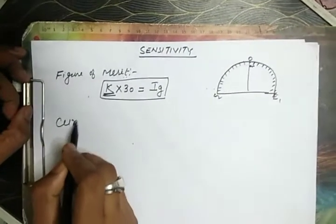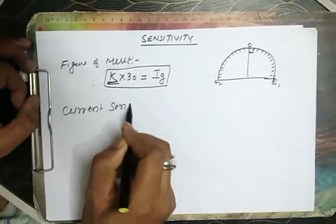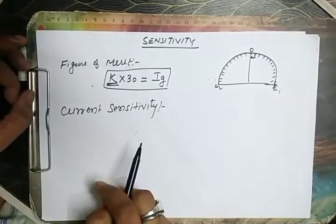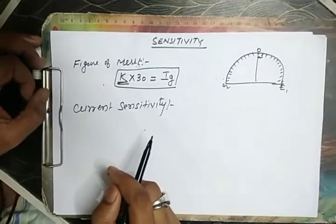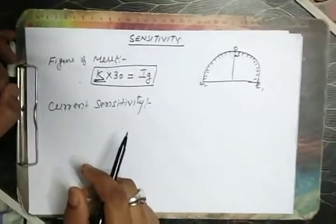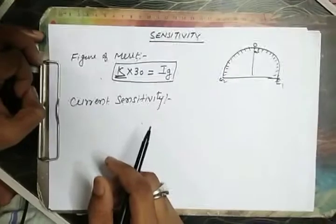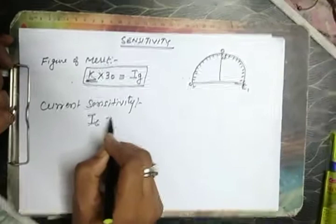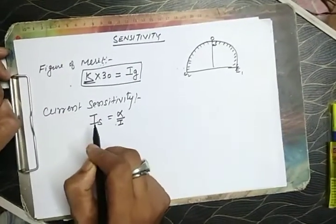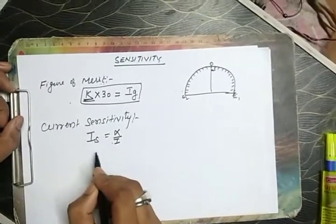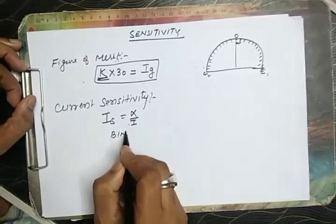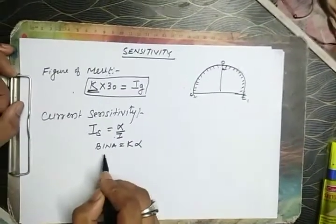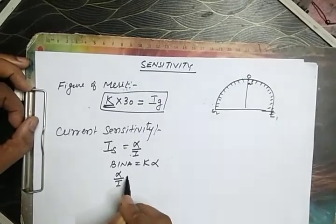Now current sensitivity. Current sensitivity of galvanometer is defined as deflection produced in the galvanometer when unit current flows through it. That is, current sensitivity is equal to alpha by I. We know that K alpha, now alpha by I equal to BnA upon k.